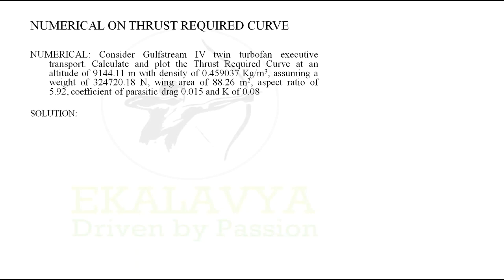The first step to solve any problem is to extract the given data. From the question we can extract: name of the aircraft as Gulfstream 4 twin turbofan, altitude of 9144.11 m at which aircraft is flying. Usually altitude is given so that we can search for density of air at that particular altitude, but luckily in this question they have shared the density data. Density is denoted by ρ∞, here ρ∞ = 0.459037 kg/m³.